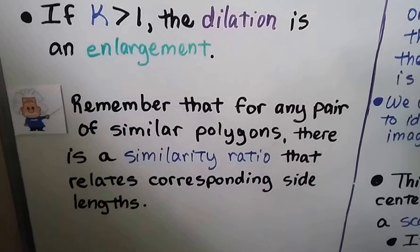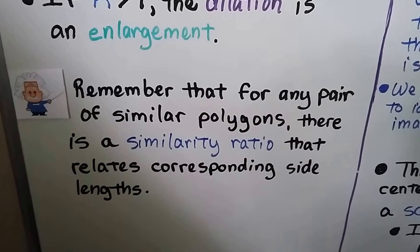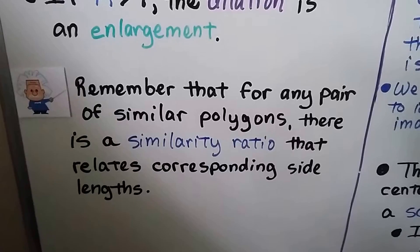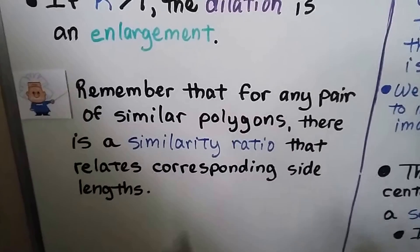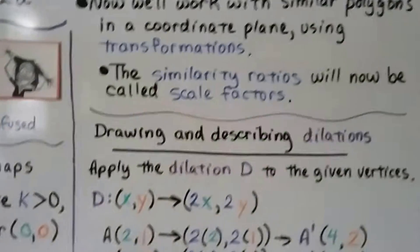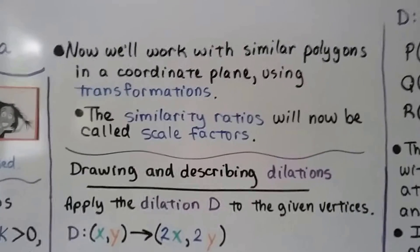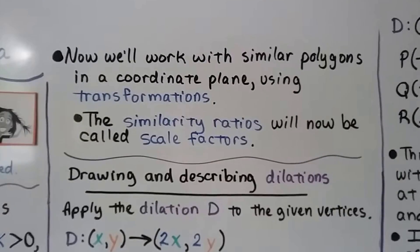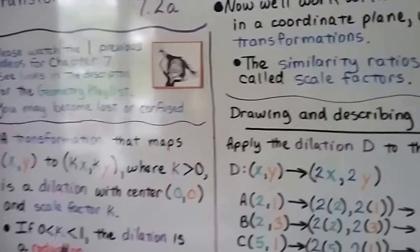And remember that for any pair of similar polygons, there's a similarity ratio that relates corresponding side lengths. We talked about that in 7.1. If you're confused, you might want to go back and watch that one first. So now we'll work with similar polygons in a coordinate plane using transformations. The similarity ratios will now be called scale factors. That's the k, that's the scale factor.